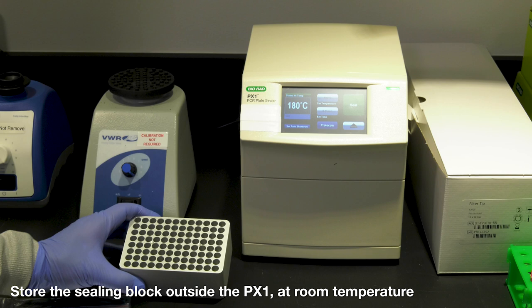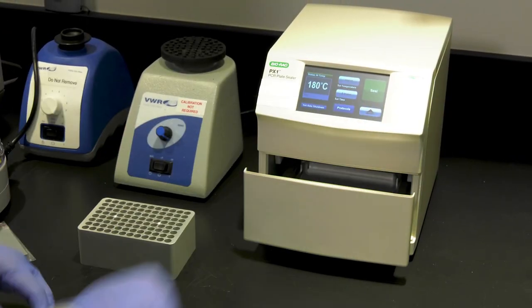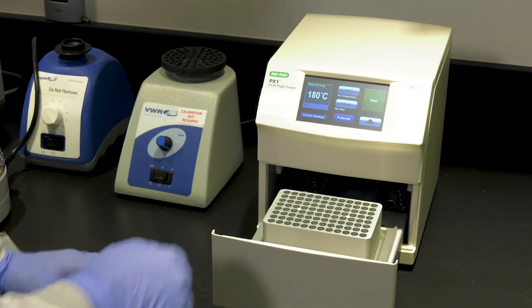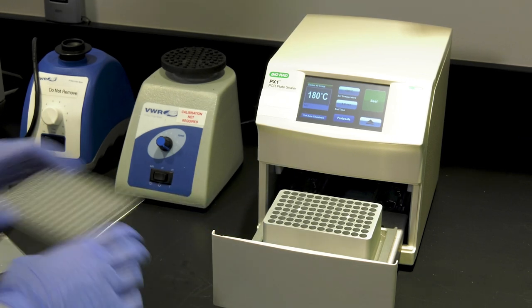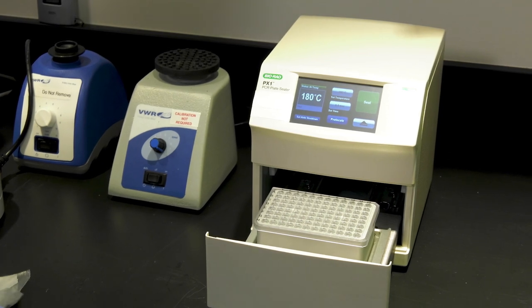If the block is hot, it could potentially hot start your reactions prematurely, so always store the block outside of the PX1. Open the PX1 and place the block securely in the holder, making sure that it's fully seated. Place the DD-PCR 96 well plate with your reactions into the block.